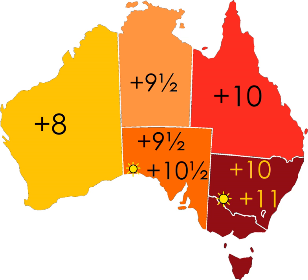Standard Time was introduced in the 1890s when all of the Australian colonies adopted it. Before the switch to Standard Time zones, each local city or town was free to determine its local time, called local mean time. Now, Western Australia uses Western Standard Time, South Australia and the Northern Territory use Central Standard Time, while New South Wales, Queensland, Tasmania, Victoria, and the Australian Capital Territory use Eastern Standard Time.